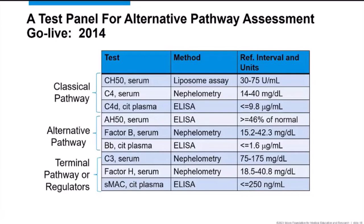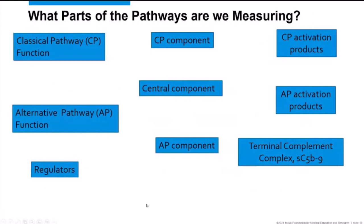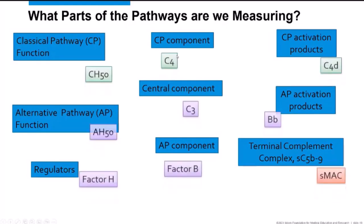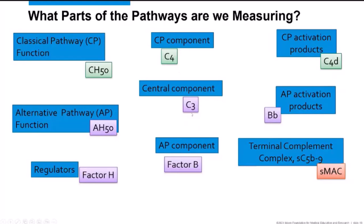The panel includes classical pathway analysis not just to focus on the alternative pathway, but to determine whether complement activation is exclusively alternative pathway or more global — the latter being seen in infection, autoimmune disease, and trauma. The panel assesses classical and alternative pathway function, regulator concentrations such as factor H, component concentrations representative of each pathway and a central component, and activation fragments — breakdown products of the initial parent fragments.